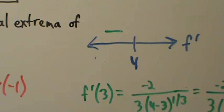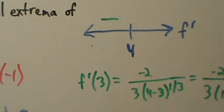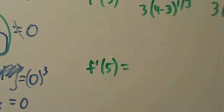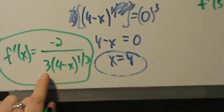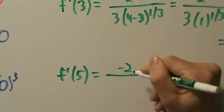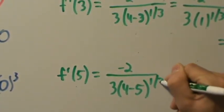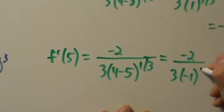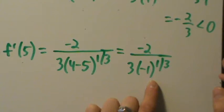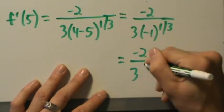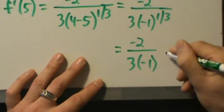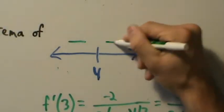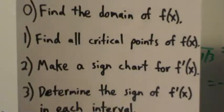Now for the interval four to infinity, let's pick x = 5. f'(5) = -2 / [3 · (4 - 5)^(1/3)] = -2 / [3 · (-1)^(1/3)]. The cube root of negative one is negative one, so this equals -2 / [3 · (-1)] = positive two-thirds, which is greater than zero. So the derivative is positive on this interval.